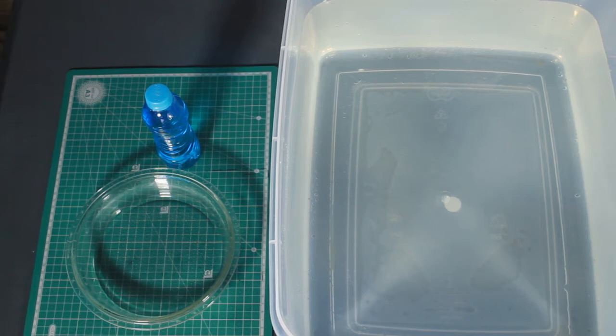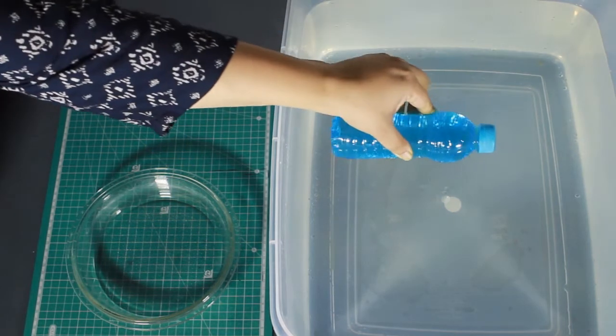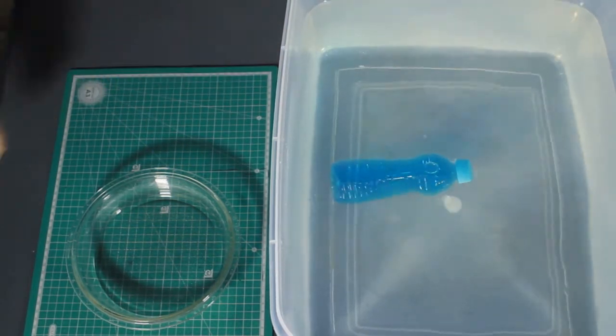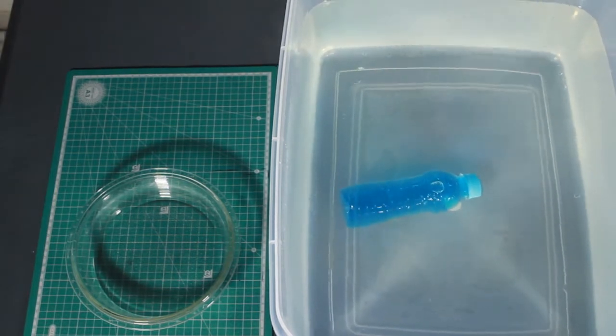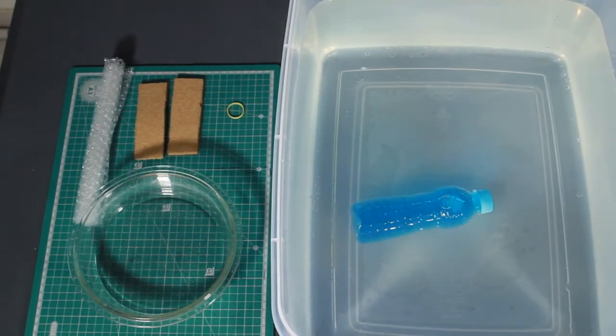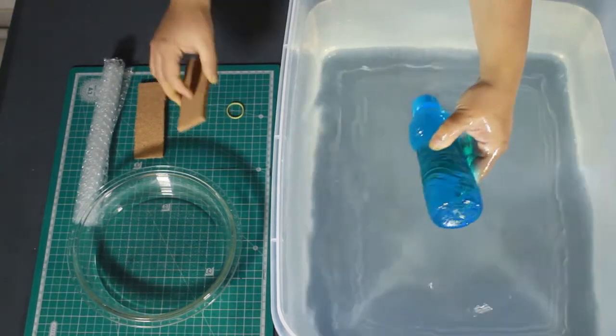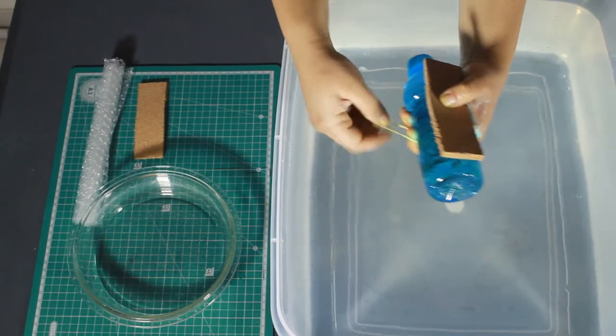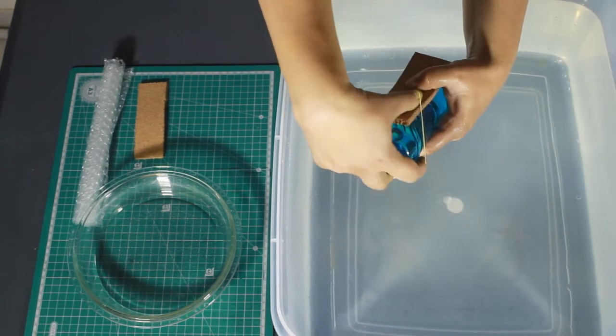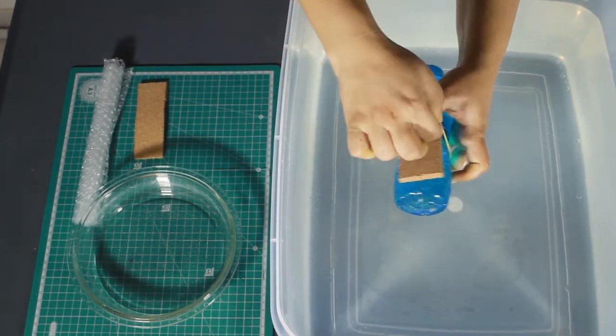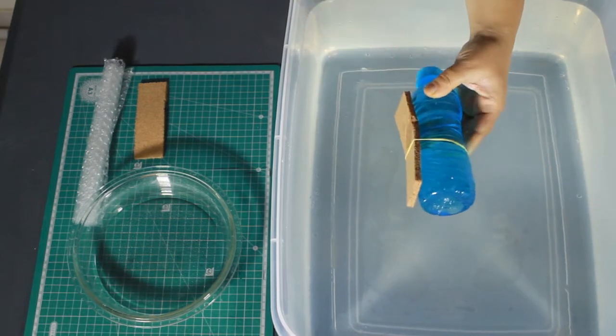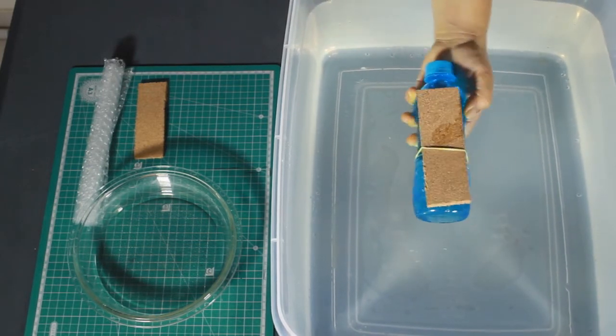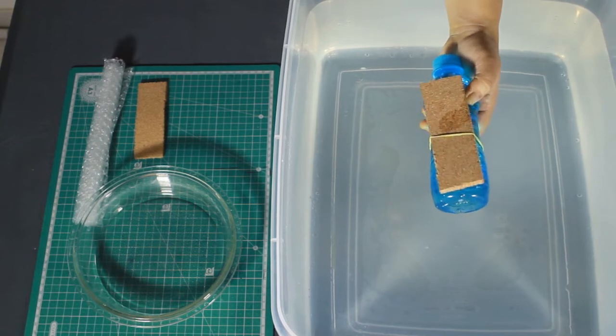It sinks. So we observed when water enters the bottle, the air in it is pushed out and the weight of the bottle increases to make it sink. Try attaching a cork to the heavy bottle with a rubber band. The cork made the heavy bottle float.